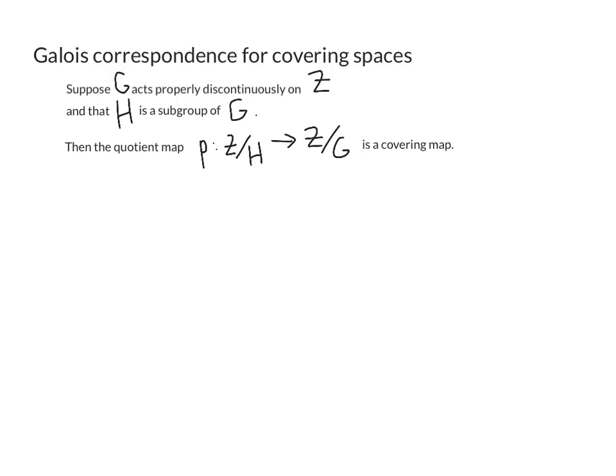So here's the other statement we needed to finish the proof of the theorem and I've stated it in slightly more generality than I did earlier. So to translate between what I said there and what I've said here Z is supposed to be the universal cover X tilde and G is supposed to be pi 1 of X. So suppose that G acts properly discontinuously on Z and that H is a subgroup of G.